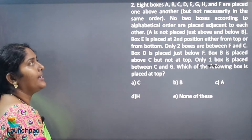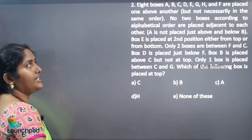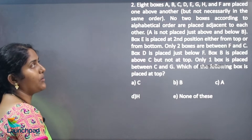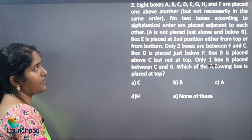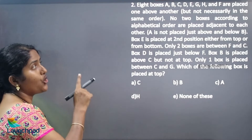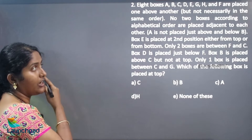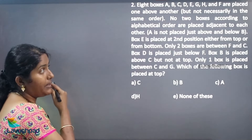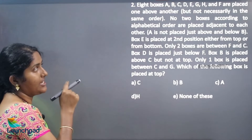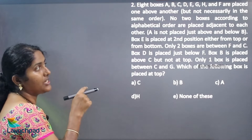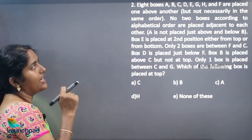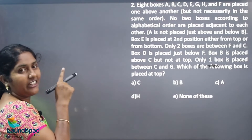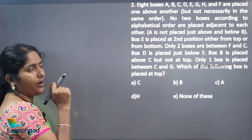8 boxes A, B, C, D, E, G, H and F are placed one above another, but not necessarily in the same order.